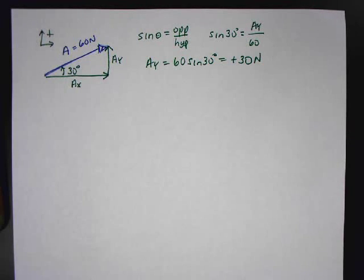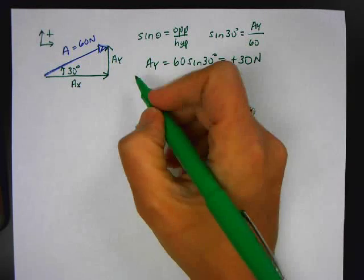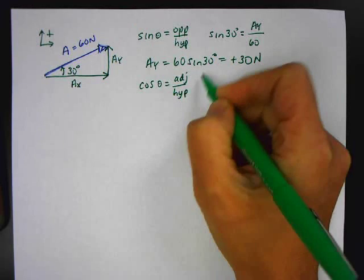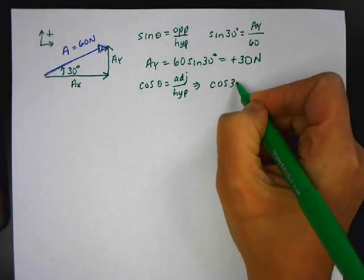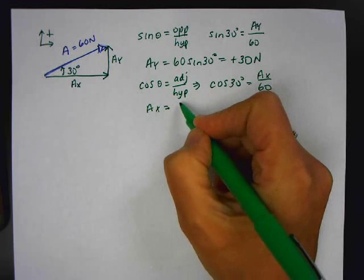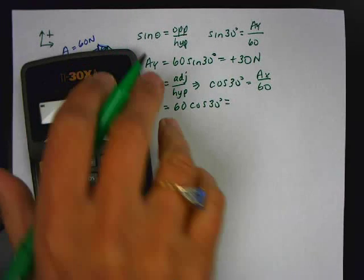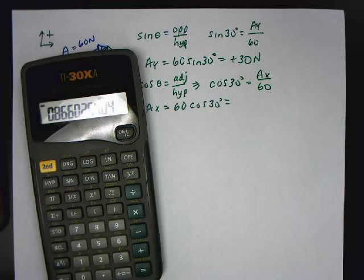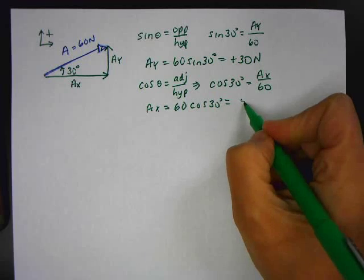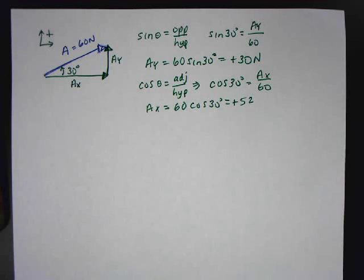Now for the x part: cosine of theta is adjacent over hypotenuse. So cosine of 30 equals A sub x over 60, meaning A sub x equals 60 times cosine of 30. On the calculator, 30 cosine times 60 equals 51.96, so I'll call that 52. This is positive. You know the direction — whether it's positive or negative — by looking at your picture, so you have to have a picture.